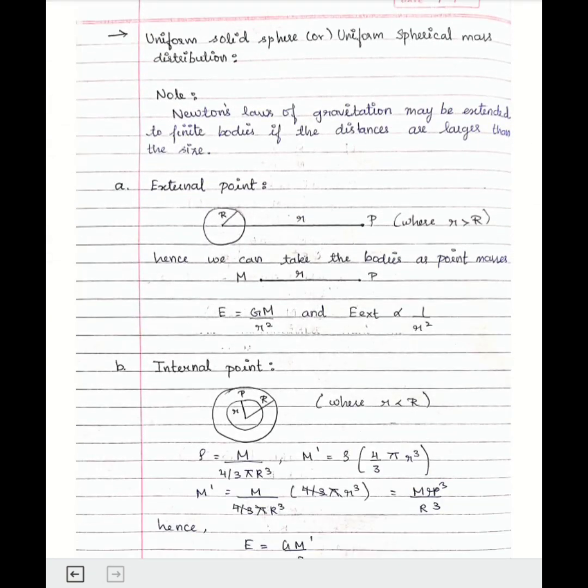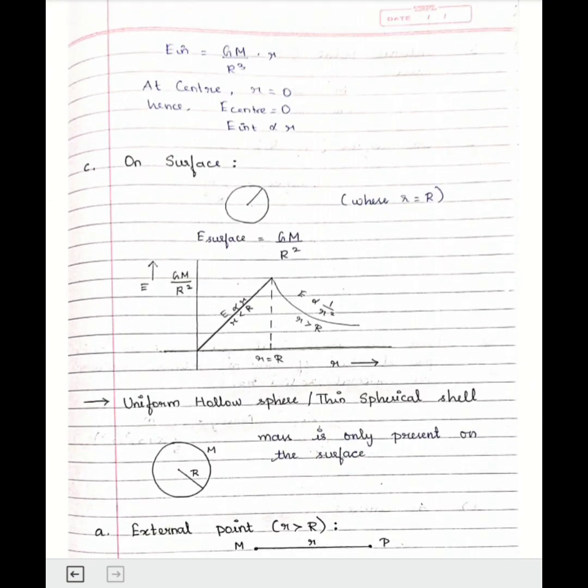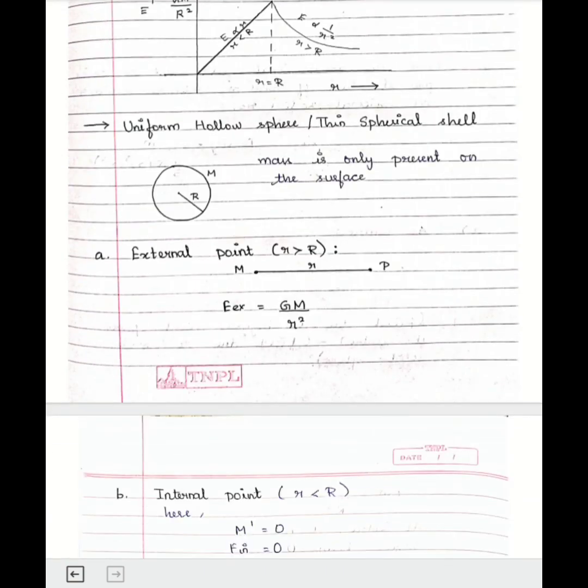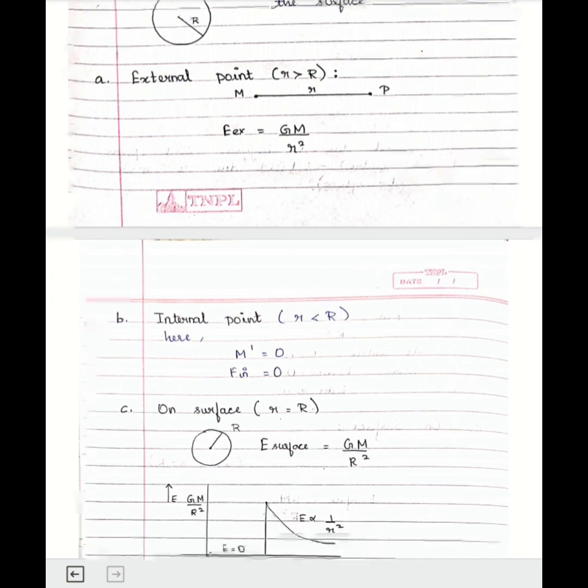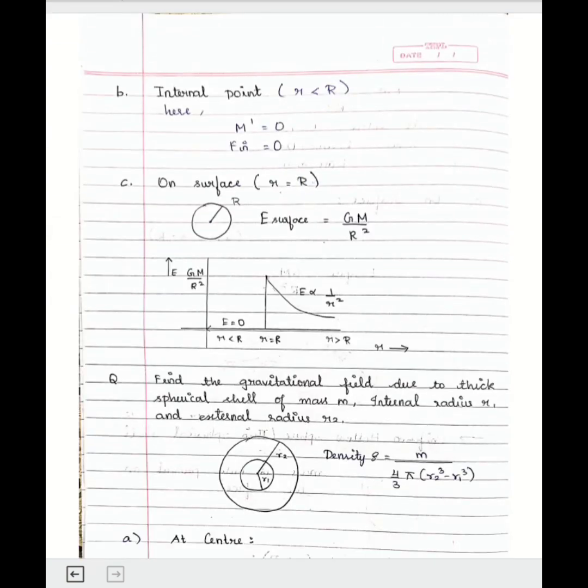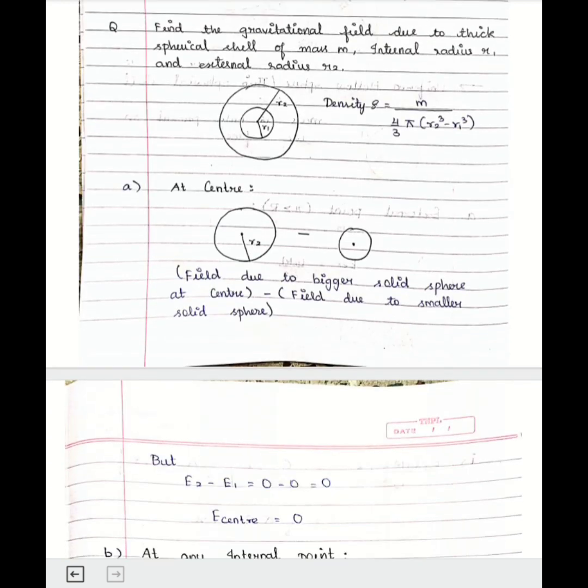Gravitational Field due to uniform solid sphere or uniform spherical mass distribution. Gravitational Field due to uniform hollow sphere or thin spherical shell. Gravitational Field due to thick spherical shell.